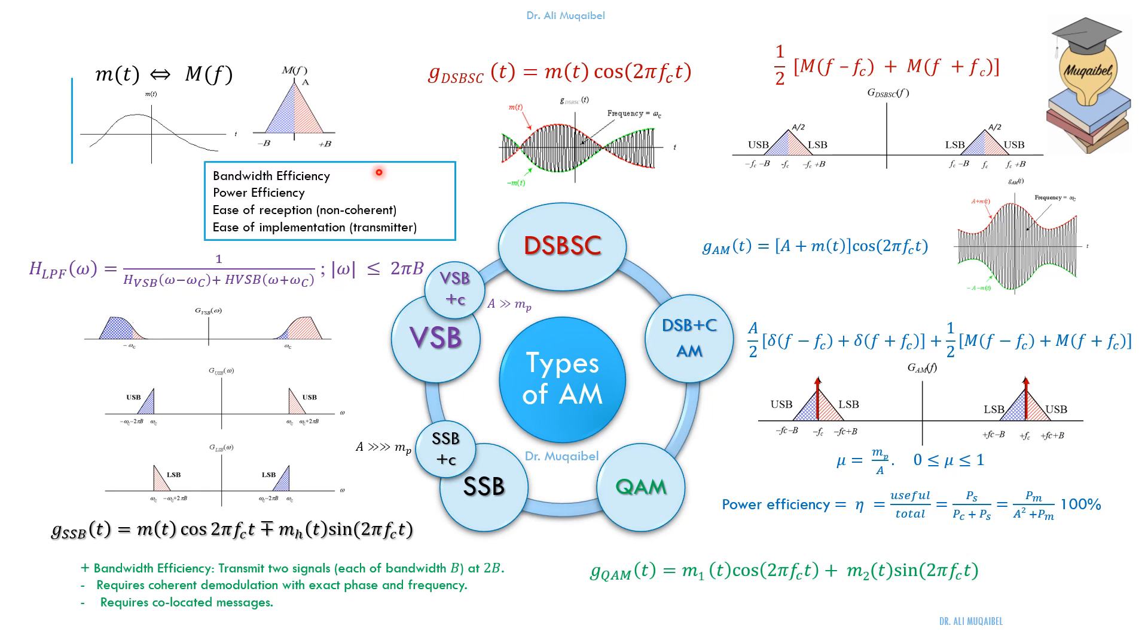So these are the possible trade-offs. And you can see that to go from one block to another, we are trading off bandwidth efficiency, power efficiency, ease of reception as in the non-coherent detector, and ease of implementation as in the design of the transmitter. These are the things that we have to look at when we choose between these modulation techniques. Thank you, and I hope it was beneficial.